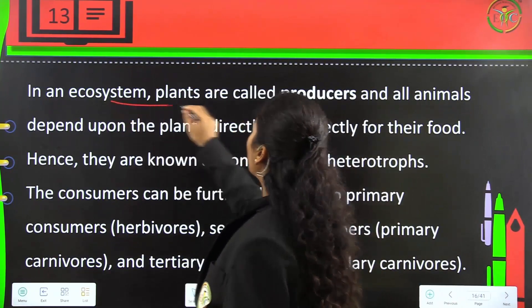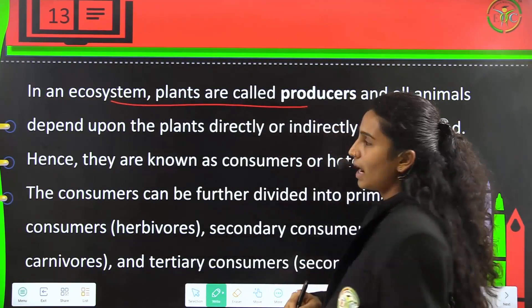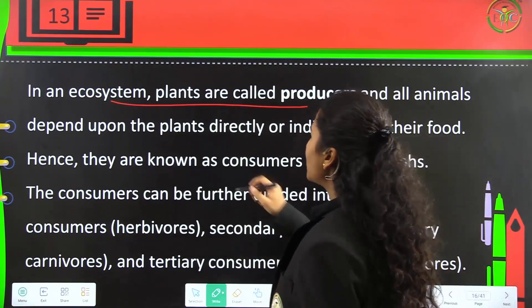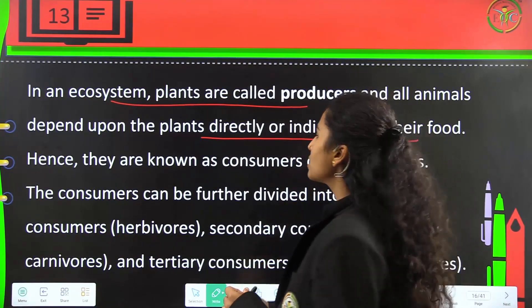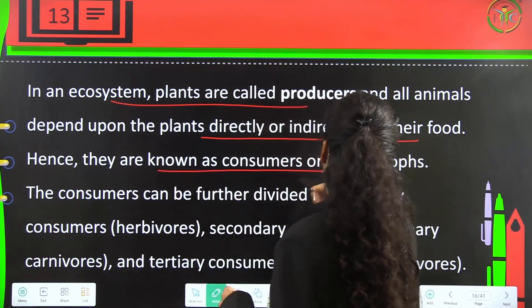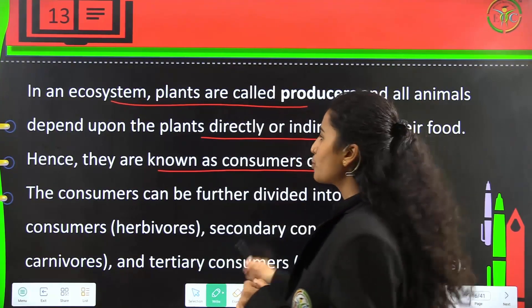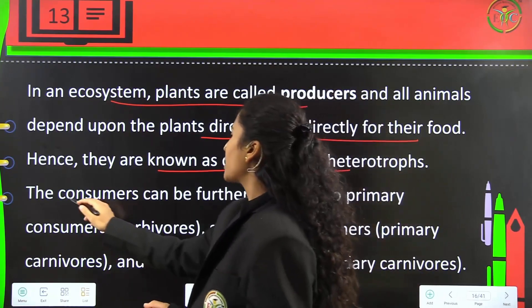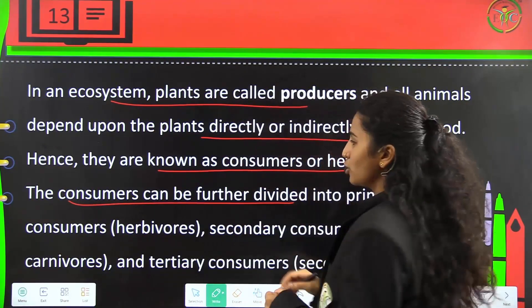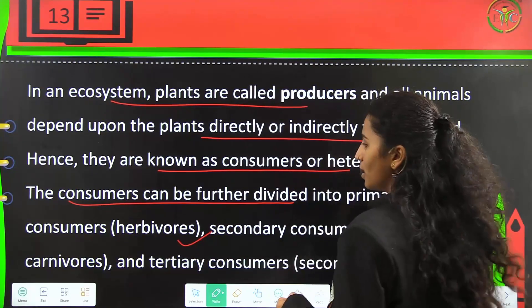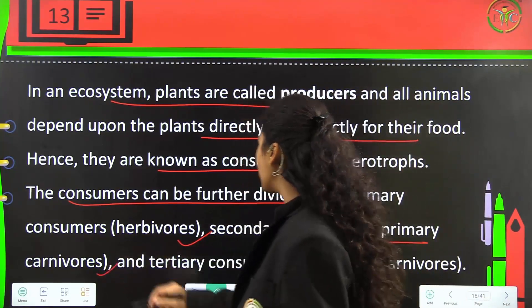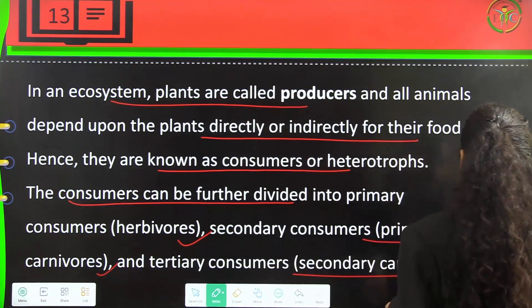In an ecosystem, plants are called producers. Animals dependent upon plants directly or indirectly for food are called consumers or heterotrophs, and plants are autotrophs or producers. Consumers are divided into primary consumers (herbivores), secondary consumers (primary carnivores), and tertiary consumers (secondary carnivores).